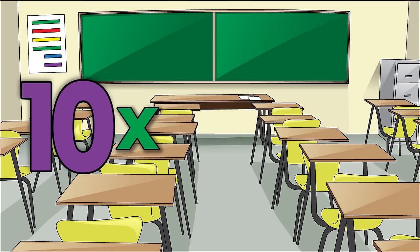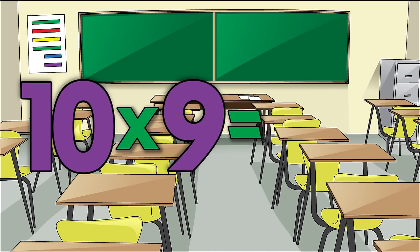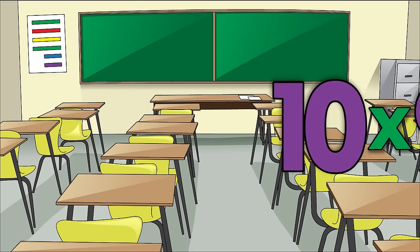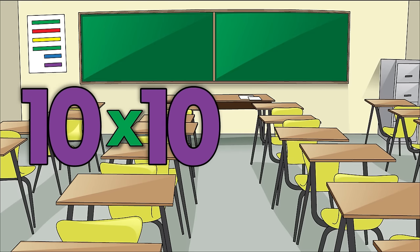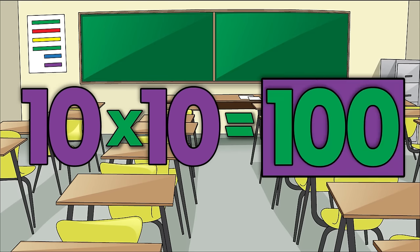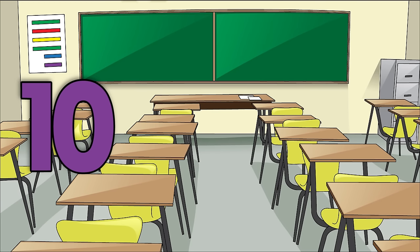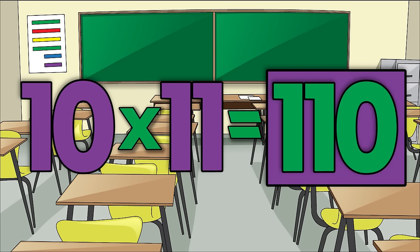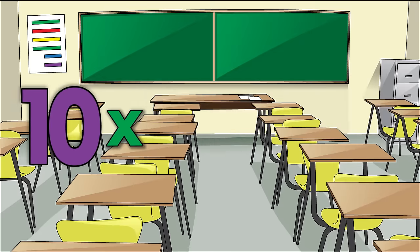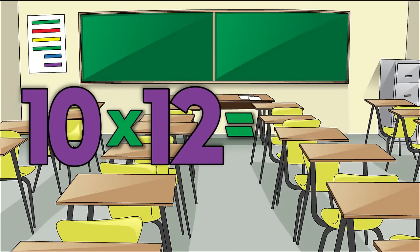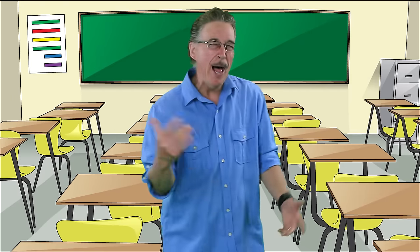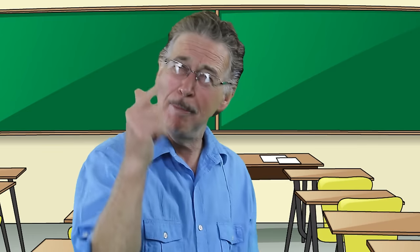Ten times seven is seventy. Ten times eight is eighty. Ten times nine is ninety. Ten times ten is one hundred. Ten times eleven is one hundred ten. Ten times twelve is one hundred twenty.